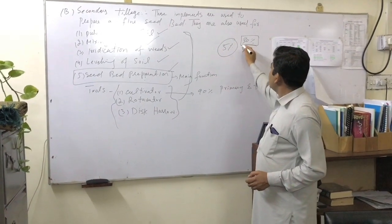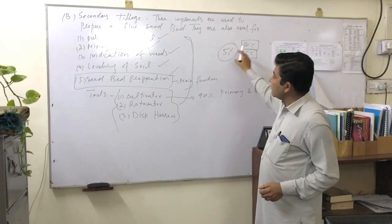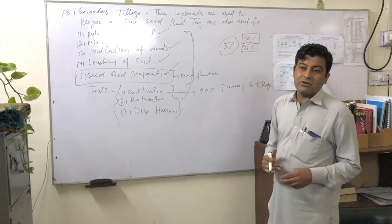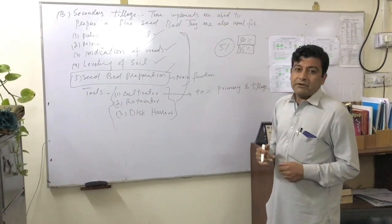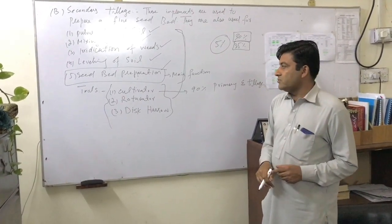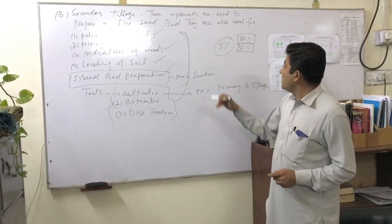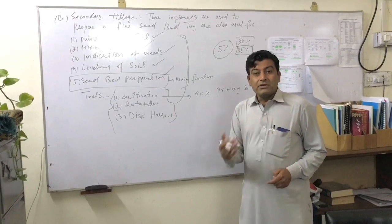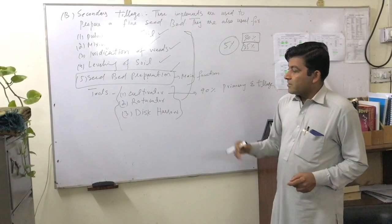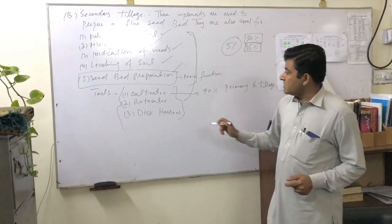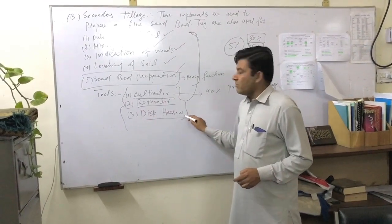Thirty percent loss has come due to compaction. Twenty-five percent loss has come due to organic matter. So what do we do? We add soil fertilizers and different chemicals to improve the soil, which is not sustainable. So we must use the secondary tillage tools. We will discuss each tool in the practical — their parts and how they work.